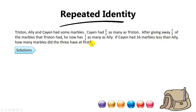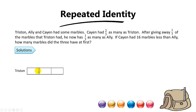If Cayenne had 16 marbles less than Ellie, how many marbles did the three have at first? The first keyword is 'Cayenne had two-thirds as many as Triston.' This means Cayenne has two units while Triston has three units. If you're not sure, you simply point an arrow. So Triston has three units while Cayenne has two units — this is how the model looks.